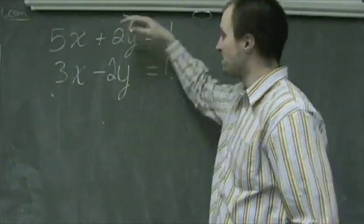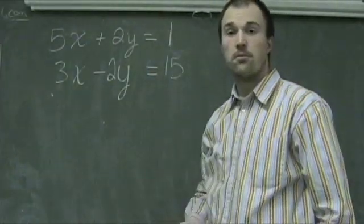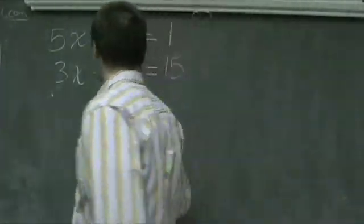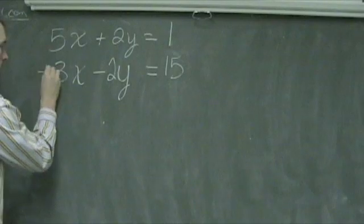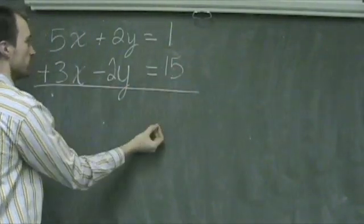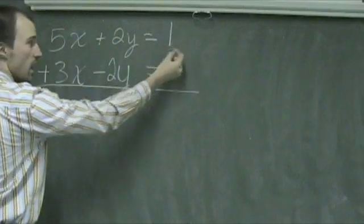is we can actually add these systems together like a regular addition problem. So, if we are to add 3x minus 2y is equal to 15, to 5x plus 2y is equal to 1,